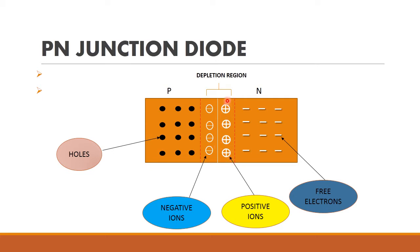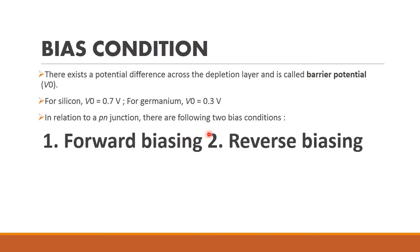In the N-type, positive ions are created, and in P-type, negative ions are created. This forms the depletion region. There will be a potential difference across this depletion layer, and it is called barrier potential.